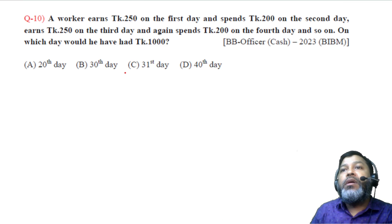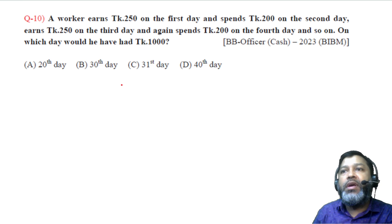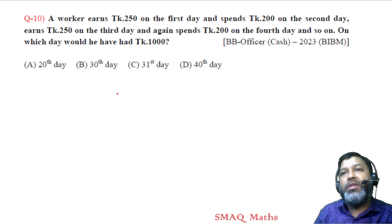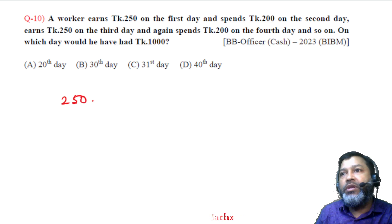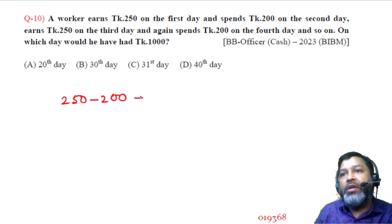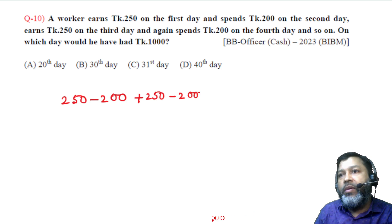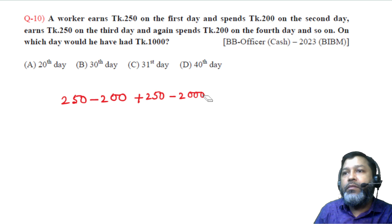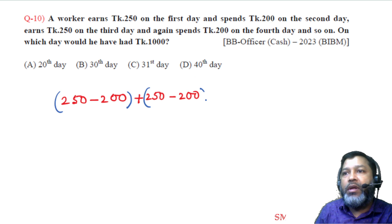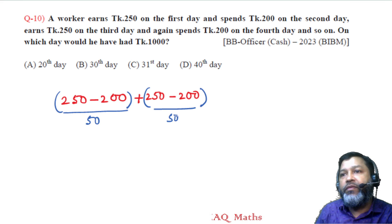Question number 10: A worker earns 250 on the first day and spends 200 on the second day, earns 250 on the third day and spends 200 on the fourth day, and so on. On which day would he have 1000? Each pair of days he nets 50 taka. After 1 day he has 250, after 2 days 50, after 3 days 300, after 4 days 100, and so on. The net gain per 2-day cycle is 50 taka.